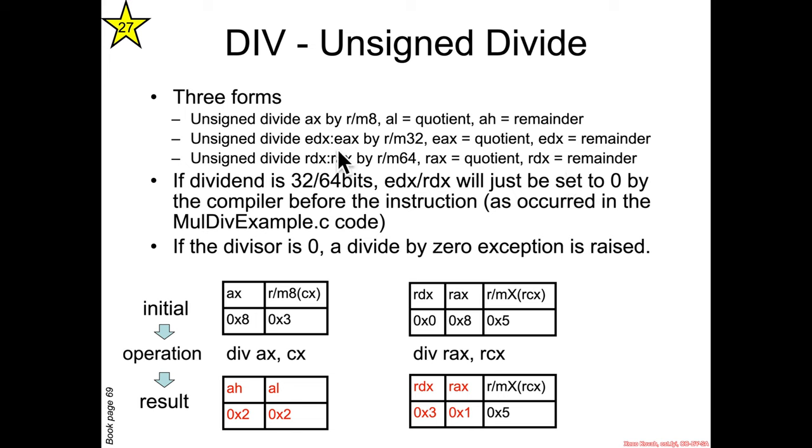If, for instance, you're in 32-bit mode but the dividend is actually only 32 bits and there's nothing going to be in EDX, then the compiler could just zero out the upper bits as we see in the assembly that's generated for this example. You can see there's an XOR that zeroes out the register. And as expected, if the divisor is zero, a divide by zero exception is raised because we're not allowed to divide by zero.